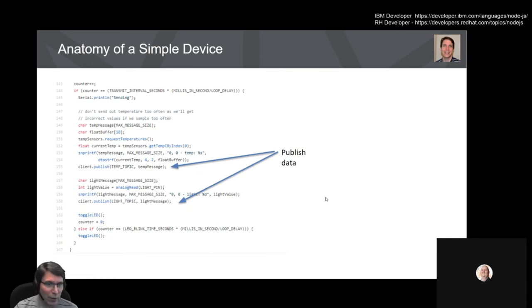Then inside that loop, the other thing we do is every so often. So we've got our transmit interval seconds and delay. We want to take the temperature and light readings and publish them to a particular topic. So we saw those topics earlier, the temp topic and the light topic. So this code basically interacts with the library that I mentioned, converts it to a string because we said that the messages were just plain formatted text and then publishes to the temp topic and the light topic and then toggles the LED so that you get some feedback that it's actually sending the data out.